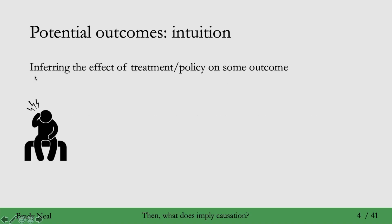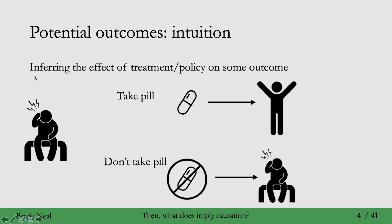Causal inference is about inferring the effect of some treatment or policy on some outcome. Consider the case that you have a headache. If you were to take a pill, it turns out that your headache would go away. If you were to not take the pill, you would still have your headache. If this were the case, then you would say that the pill probably has a causal effect on your headache—it makes it go away.